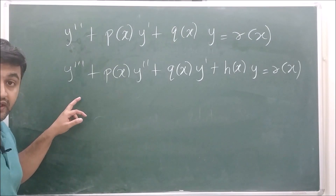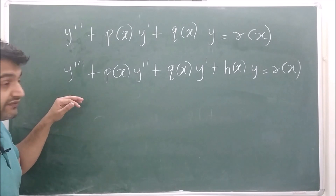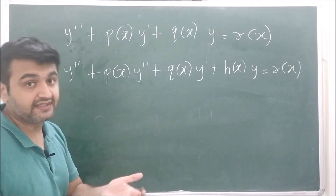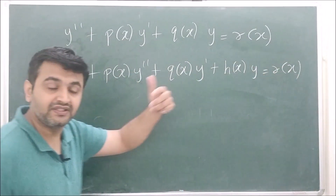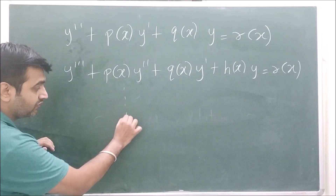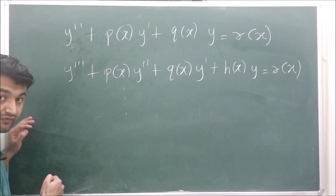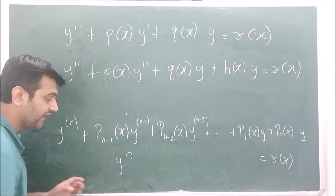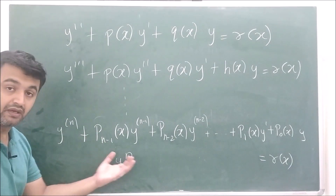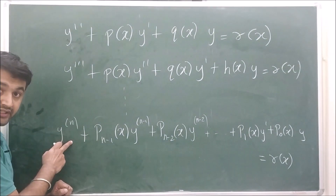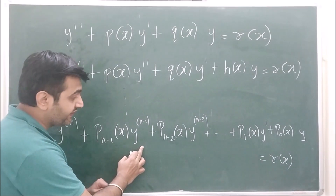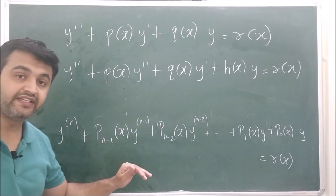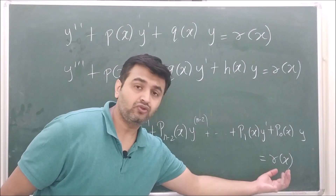One can generalize the same idea to higher order. For a third order linear differential equation, all degrees of the dependent variable and its derivatives have degree 1 with no products, and again zero means homogeneous and non-zero means non-homogeneous. Similarly, one can generalize to an nth order linear differential equation of the form y^(n) + p_{n-1}(x)y^(n-1) + p_{n-2}(x)y^(n-2) + ... + p_0(x)y = r(x), where the bracket notation denotes the nth derivative.